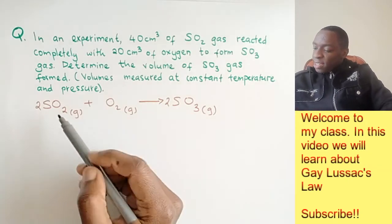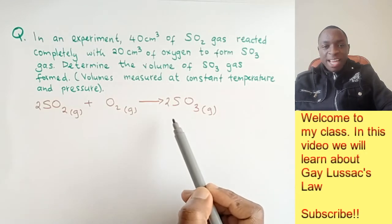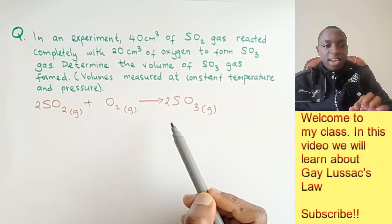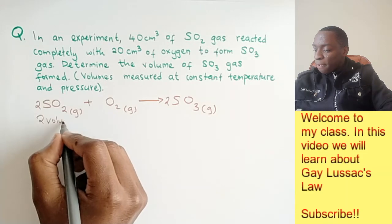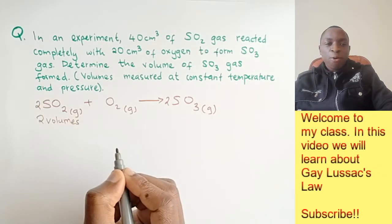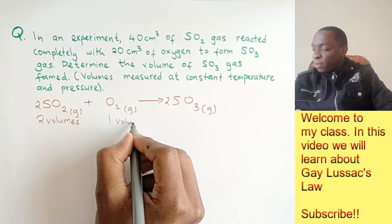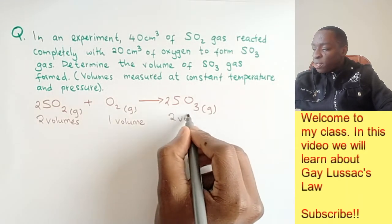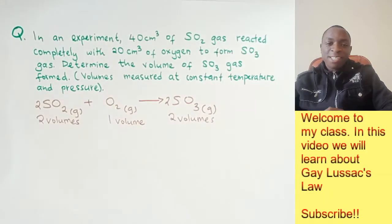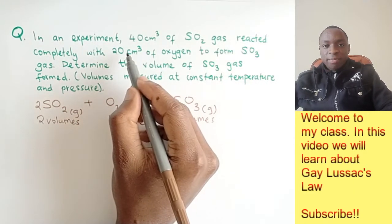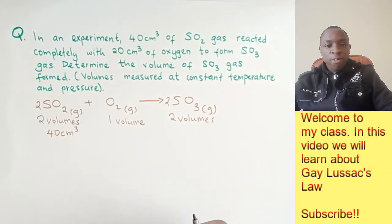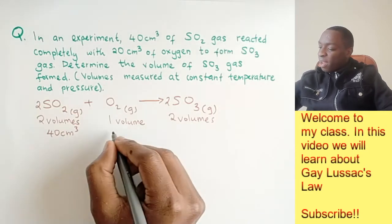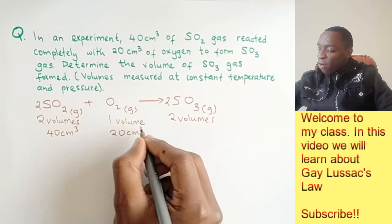In this case, the numbers used to balance the equations are the same ratios, or volume ratios, that these gases would react in. So two volumes of sulfur-4 oxide would react with one volume of oxygen to give two volumes of sulfur-6 oxide gas. We have been provided with 40 cubic centimeters of sulfur-4 oxide gas and 20 cubic centimeters of oxygen gas.